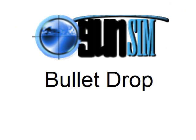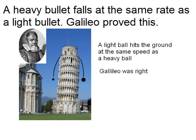Hi, this is Frank from GunSim.com, and today's subject is bullet drop, a subject dear to all our hearts. The first newsflash is that a heavy bullet falls at the same rate as a light bullet. Aristotle used to believe that heavy bullets would fall faster than light bullets, but he was wrong. It's very easy to demonstrate.